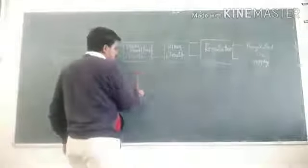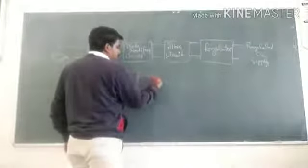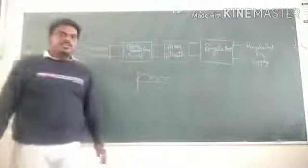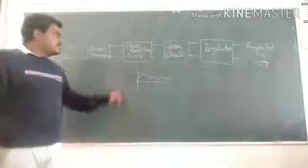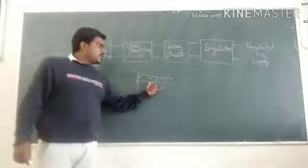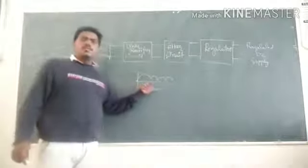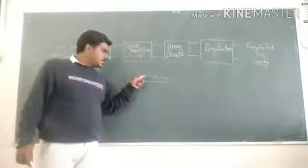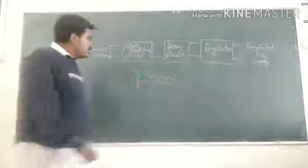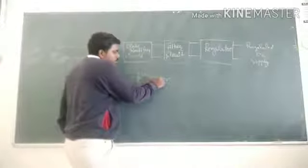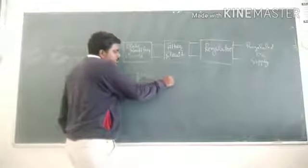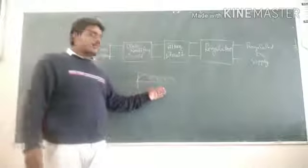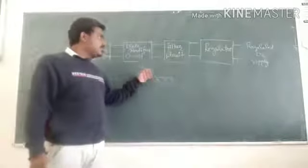Pulsating DC is generated. This kind of signal is not a perfect DC. So we have to remove this pulsating DC. It is a DC now, but it is not a perfect DC. We have to convert that pulsating DC into a normal DC.